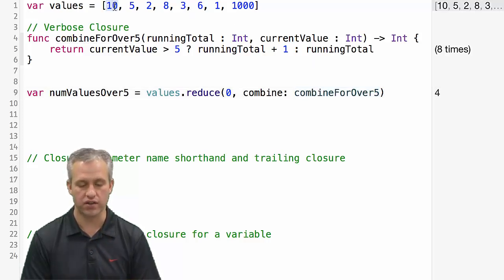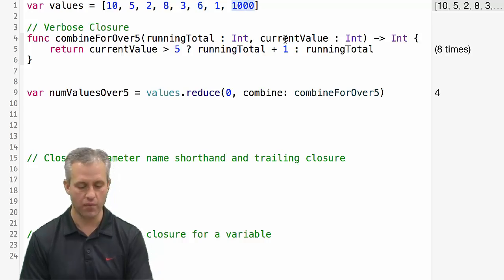So four is correct because it found the 10, it found the eight, it found the six, it found the 1000. I mean, if you wanted to prove it to yourself, you could change the 1000 to something that's smaller and you could see it works.